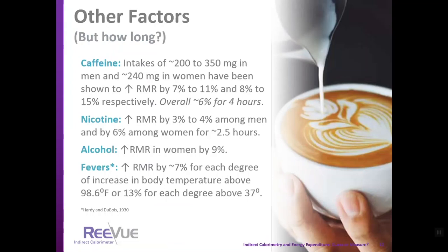Other factors that may increase energy expenditure include caffeine, nicotine, alcohol, and fevers, though these are all short-lived. Caffeine may increase energy expenditure by up to 11–15%, but on average it's around 6%, lasting about 4 hours. Nicotine also increases resting metabolic rate for approximately 2.5 hours. Fevers increase RMR by 7% for each degree of body temperature above normal, but this should be short-lived because high temperature is not associated with health and should be treated.